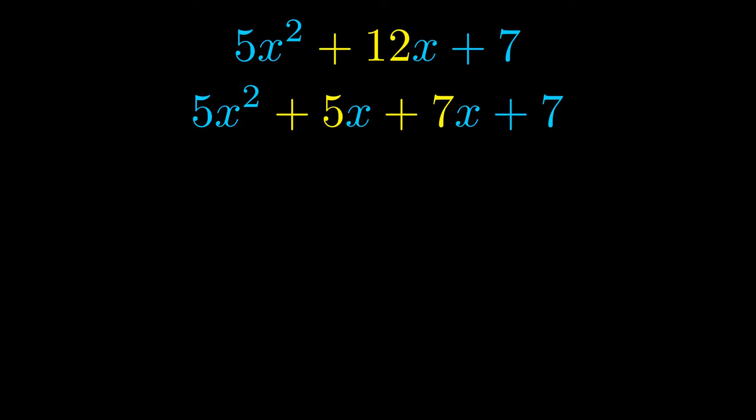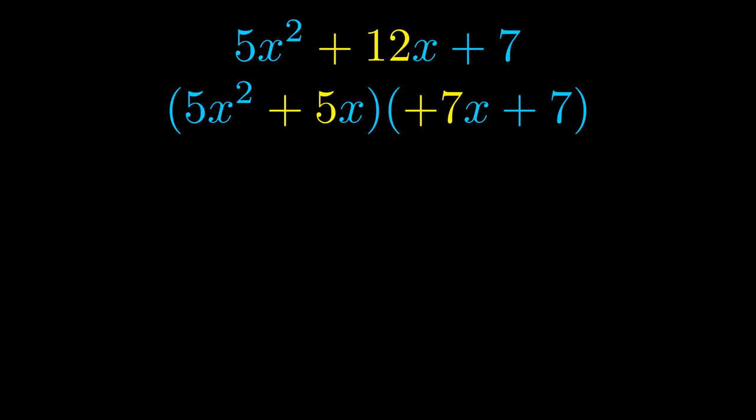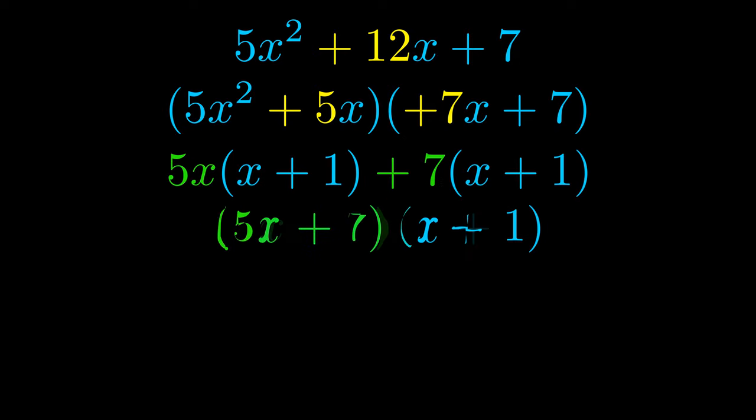Once we've done this we go ahead and put parentheses around the first term and the last term so that we can take the greatest common factor out of both terms. We can see the greatest common factor is now outside in green. Notice also how what remains inside of the parentheses is the same in both cases. The blue values are the same.